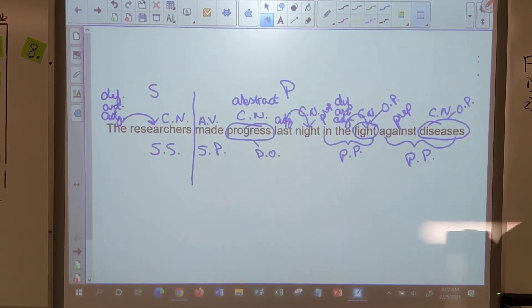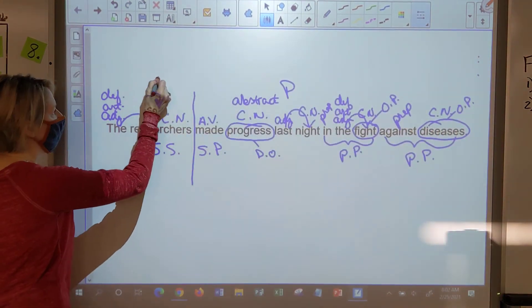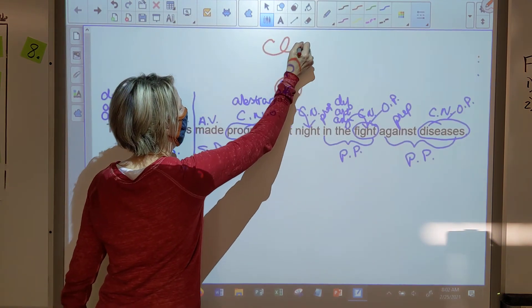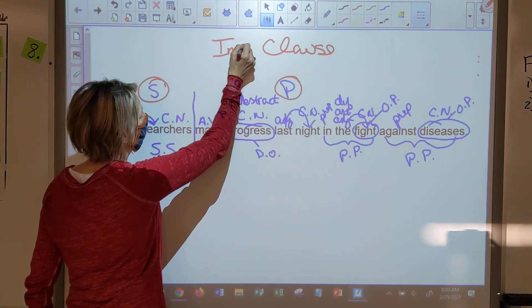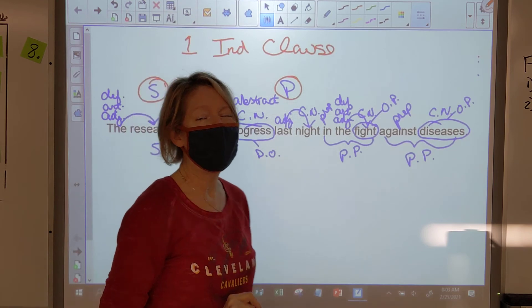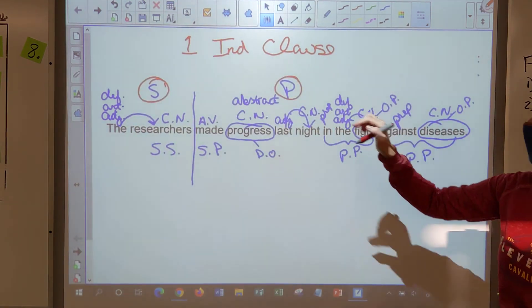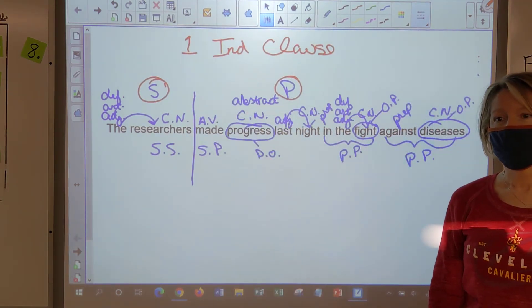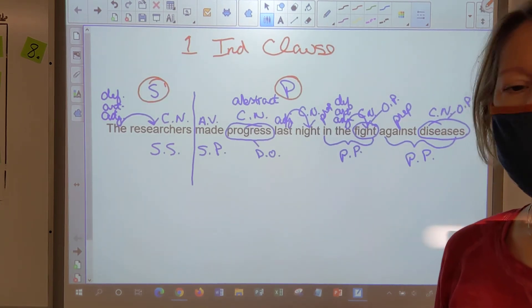There's one clause. How do you know that? Because there's one subject and one predicate. One subject, one predicate means we have one clause. And the clause is independent. And it is independent. Why? That's not why it's independent. That's why it's something else. Why is this independent? Because you can use it by itself. Yes. It can stand alone. It makes sense all by itself. It doesn't need help.